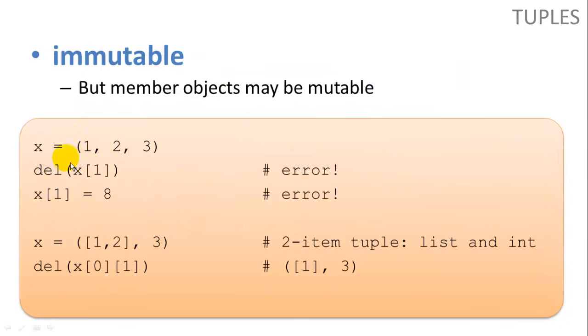So tuples are immutable, as I said. If we try to delete an item from a tuple or change the value of an item in a tuple, we're going to get an error. But if we have, let's say, a list inside of a tuple. Here we have a tuple called x, and our first item is a list with 1 and 2 in it, and our second item is an integer 3. So we can't change that 3. That's immutable. However, we can change the list. Here we're going to delete the first item in the list, which is 2, the item in index 1. So our new tuple has a list with just the 1 in it and integer 3. So we can change the list. The list itself is mutable, but the tuple is not. We still have to keep the list in this position.